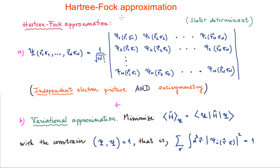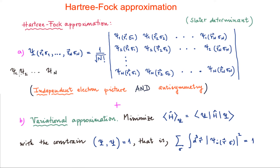We are going to go a step farther from the Hartree approximation and here we're going to describe the Hartree-Fock approximation. We are making this description in the general context and then we'll apply that to the uniform electron gas. The Hartree-Fock approximation is based on two features. First, we'll consider the independent electron picture, which means that the wave function is going to be described as a product of the individual electronic wave functions.